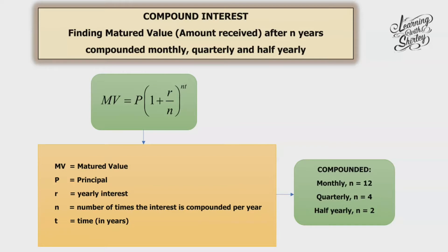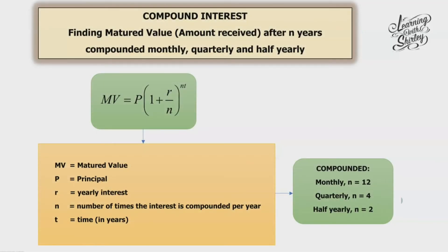Before we hit the questions, let's look at this formula. The formula to calculate matured value is MV equals to P bracket 1 plus R over N, the whole thing to the power of NT. MV stands for matured value, which is the principal plus compound interest. P is principal, which is the money that you deposit at first, and R is yearly interest in percentage.